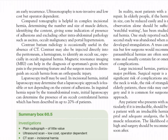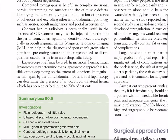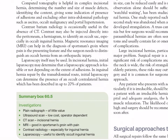CT is helpful in complex incisional hernia — determining the number and size of muscle defects, identifying the content, giving some indication of the presence of adhesions, and excluding other intra-abdominal pathology such as ascites, occult malignancy, and portal hypertension. Contrast barium radiology is occasionally useful; contrast may also be injected directly into the peritoneum — a herniogram — to identify an occult sac, especially in occult inguinal hernia. MRI can help in the diagnosis of sportsman's groin where pain is the presenting feature. Laparoscopy itself may be used: in incisional hernia, initial laparoscopy may determine whether a laparoscopic approach is feasible. In inguinal hernia repair by the transabdominal route, initial laparoscopy can identify an occult contralateral hernia, described in up to 20% of patients.